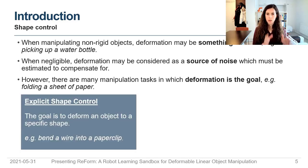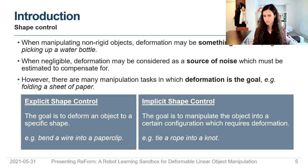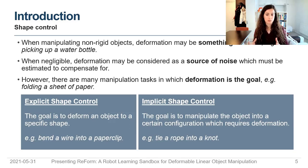Explicit shape control, where the goal is to deform the object into a specific shape, such as bending a wire into a paper clip. And implicit shape control, where the goal is to manipulate the object into a configuration where we don't care exactly how it looks, but it has to satisfy some more abstract concept, like tying a rope into a knot.